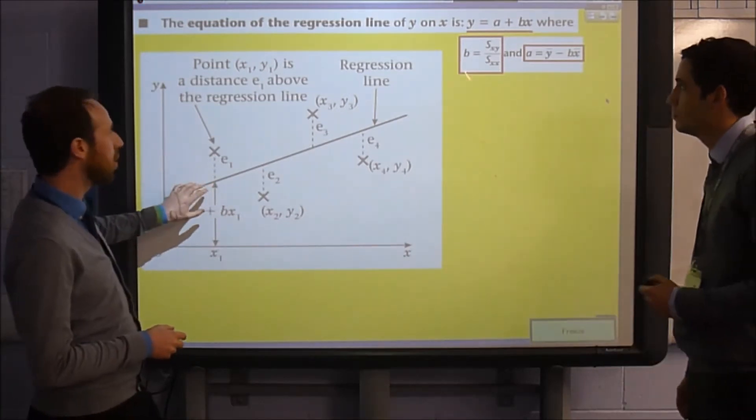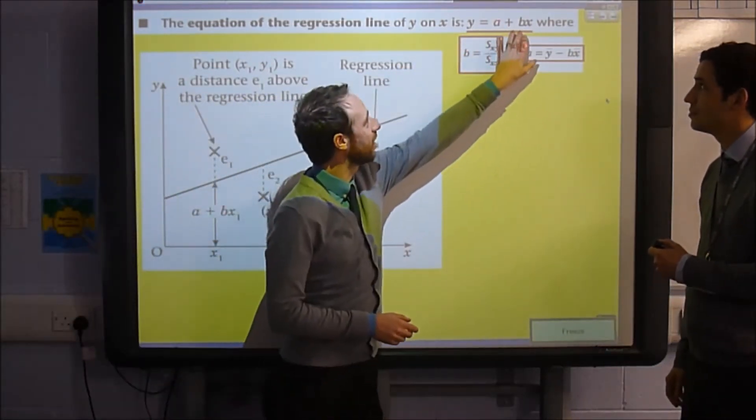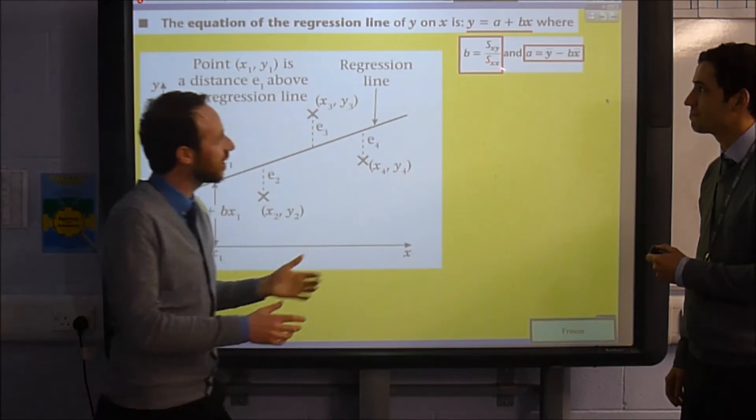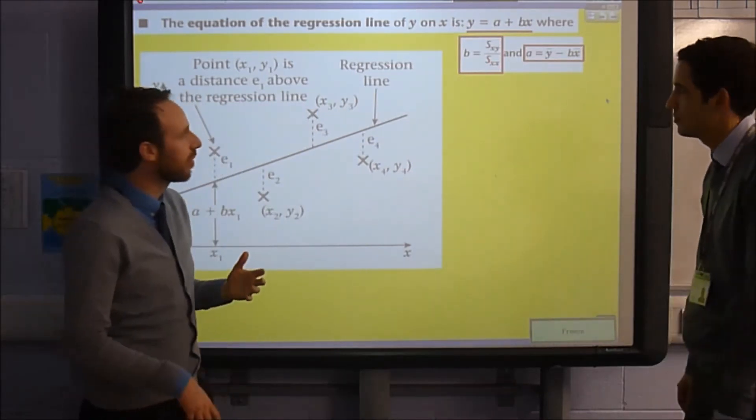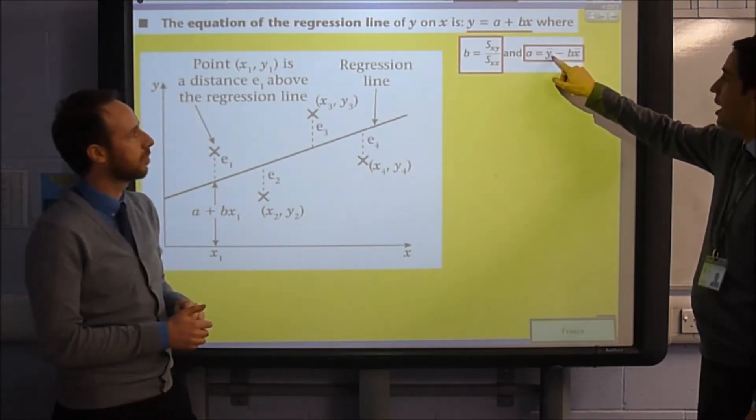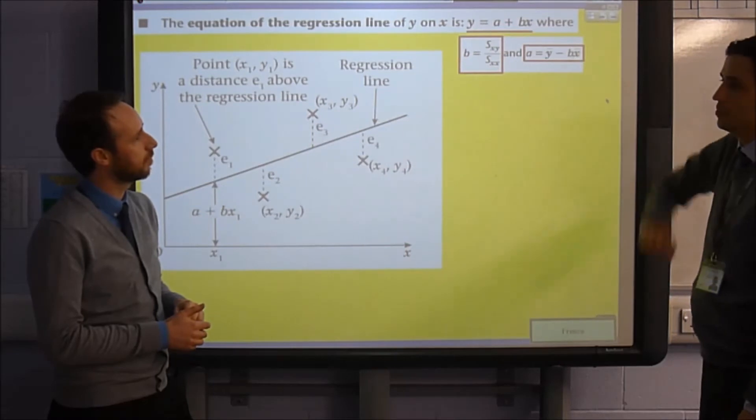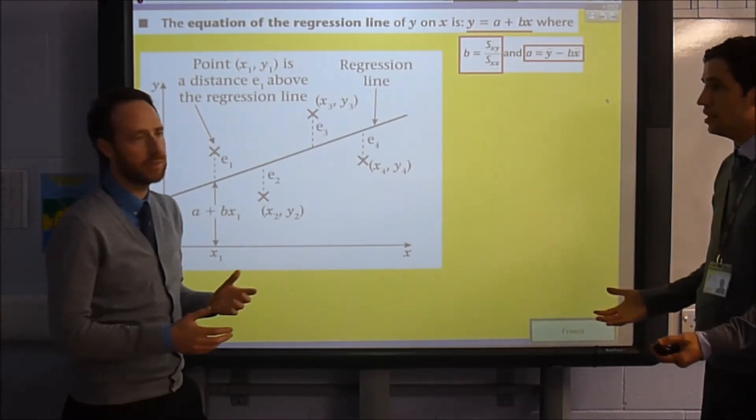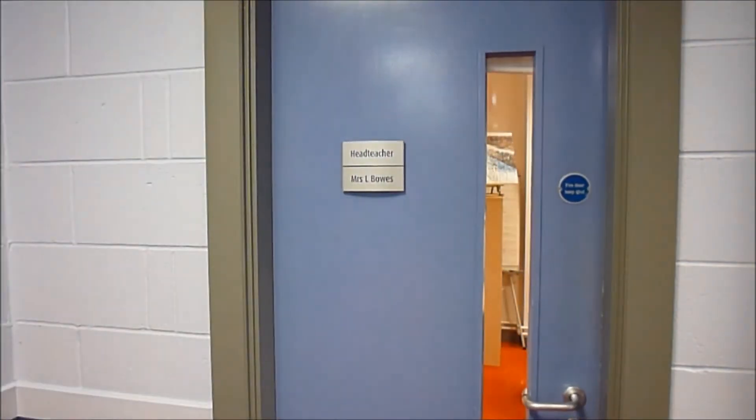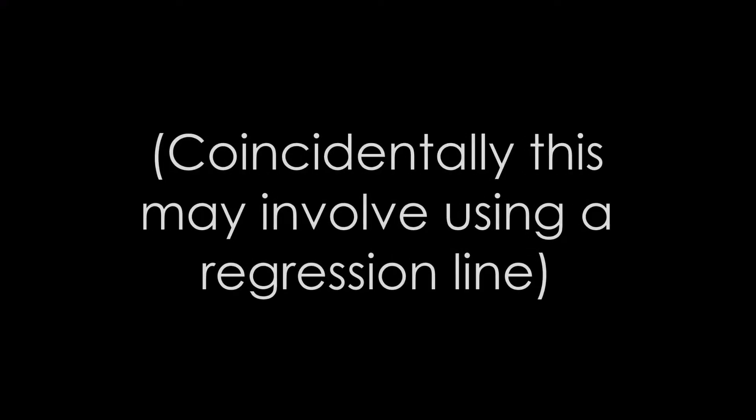And so, to actually work out the equation of this line, we just need to calculate B and A. Well, B is just SXY over SXX, which is exactly what we looked at last week. And then, for A to calculate that, we just take the mean value for Y and take away this value B we've calculated times the mean value of X. And that's it. That's done.